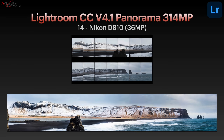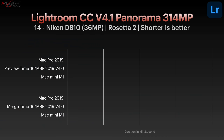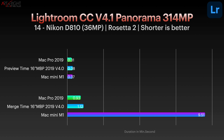Here's another merge group of 14 Nikon D810 images — same group as before. Preview generation was about 20 seconds on all machines, with the Mac Mini only slightly longer. For the merge: Mac Pro finished in under a minute, MacBook Pro in 1 minute 12 seconds, while the Mac Mini M1 took 9 minutes 51 seconds — again the fastest result we could achieve after multiple runs. Lightroom CC 4.1, even running natively on the Mac Mini, is still not optimized in all aspects of the program yet.